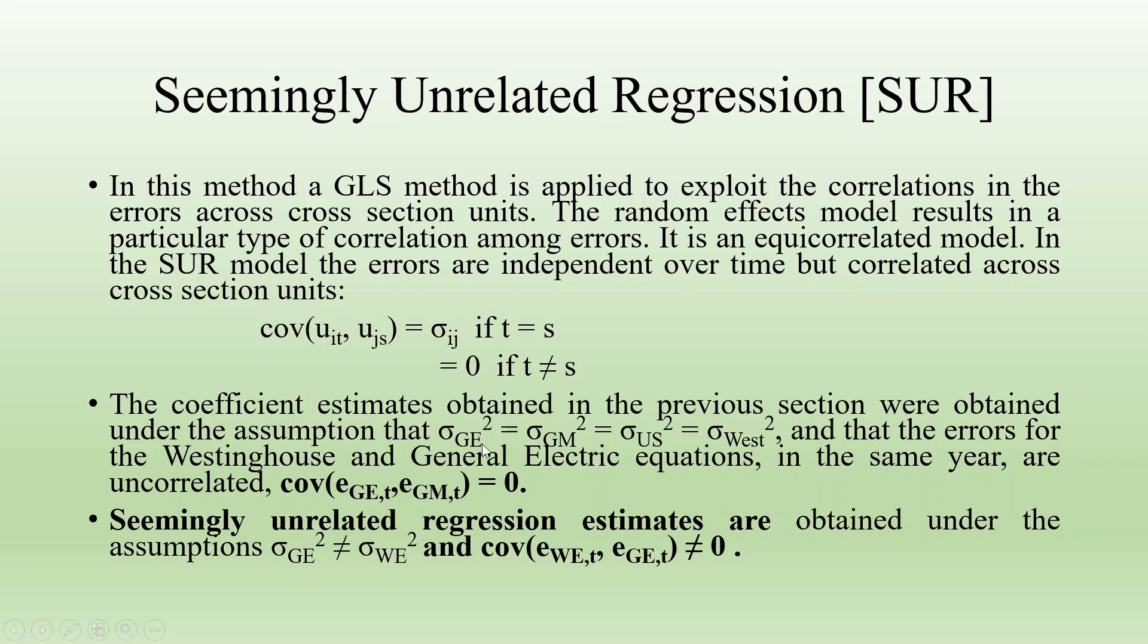Our basic assumption was that the variance among GE, that is General Electric, General Motors, US Steel, and Westinghouse, they are all equal and the errors for the Westinghouse and General Electric equations in the same year are uncorrelated. This was our assumption.